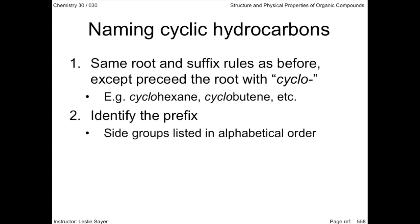Carbon atoms are not numbered if there are no side groups, or if a cycloalkane has only one side group. Otherwise, side groups are listed in alphabetical order as before. Number the carbons so as to provide the lowest numbers possible in the name. Treat the ring itself as the parent chain if side groups are present.